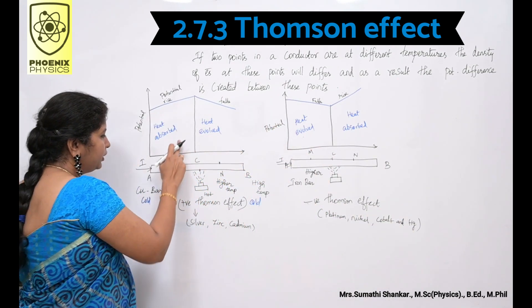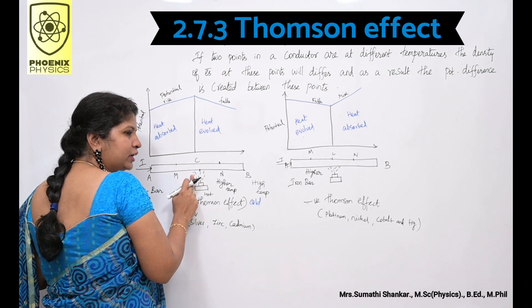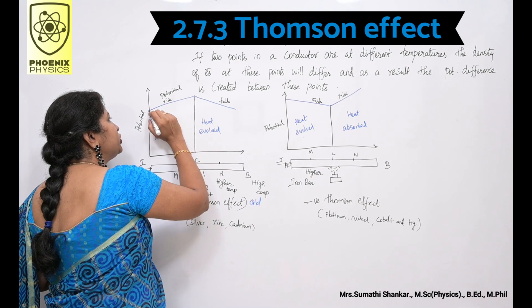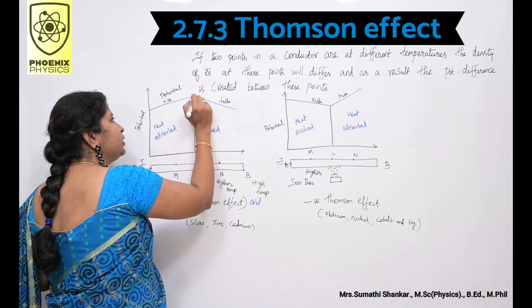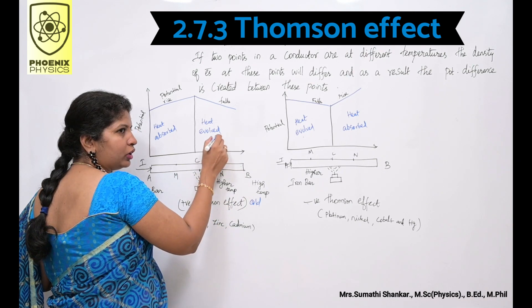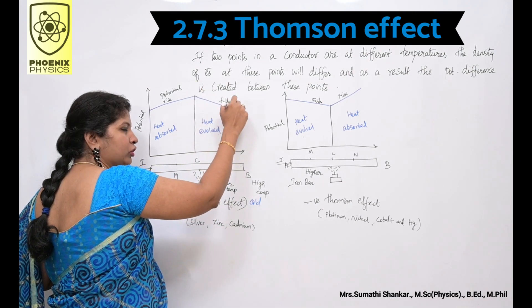Look at the graph. From A to C, heat is absorbed. So here potential reaches the maximum. From C to B, heat is evolved. Here, potential falls.